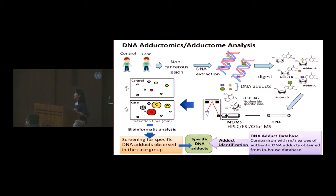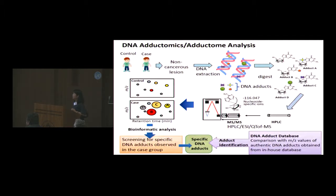This is the DNA adductome analysis concept. DNA adductome analysis is a comprehensive analysis for DNA adducts. DNA is extracted from tissues, then enzymatically digested into mononucleosides, and subjected to LC-MS/MS. The obtained outcomes are separated by retention time and m/z values to screen for specific DNA adducts. Using bioinformatics analysis, if specific DNA adducts are found, identification is done by comparison with m/z values of authentic DNA adducts from an in-house database.